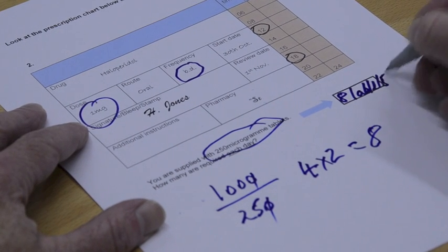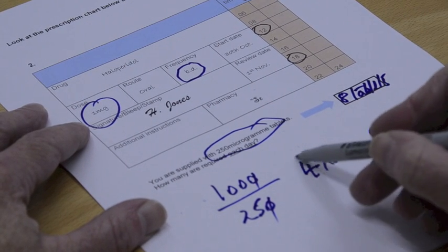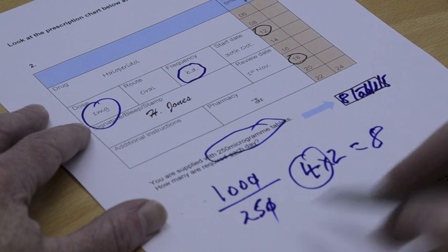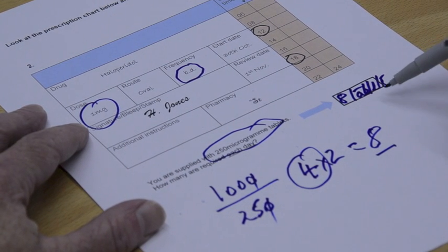So, BD twice a day, just double your answer that you got from dividing 250 into 1,000, which gives you your 8 tablets.